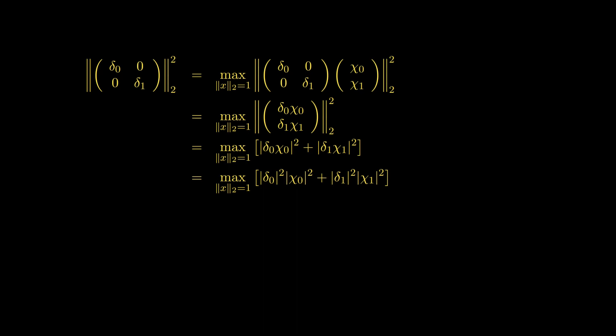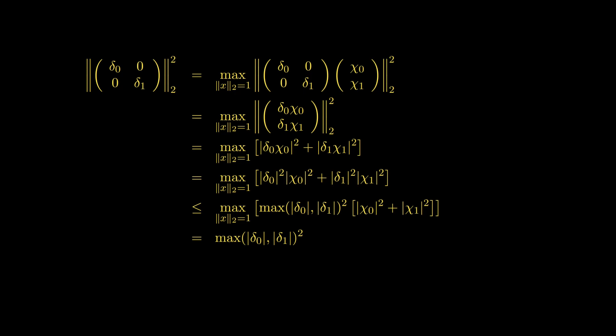We can factor out |δ₀|² and |δ₁|². Then if we take the maximum of those, we can factor that out and bring it outside the first max. We can recognize that the max over all vectors with 2-norm equal to 1 of the 2-norm squared of that vector is just 1. That gives us that the 2-norm of the diagonal matrix squared is less than or equal to the max of the absolute values on the diagonal squared.